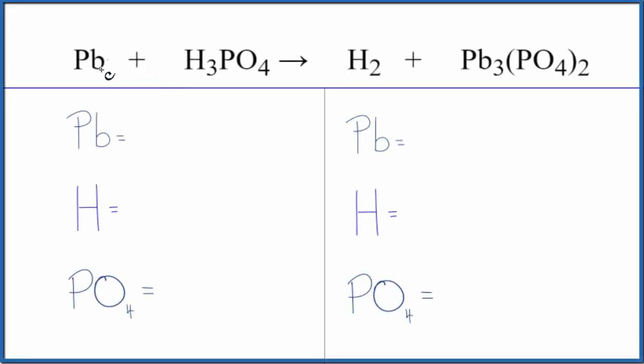In this video we'll balance the equation for Pb plus H3PO4, this is lead metal plus phosphoric acid. We use a little bit of a trick in this to make it a lot easier, so let's count the atoms up on each side of the equation.